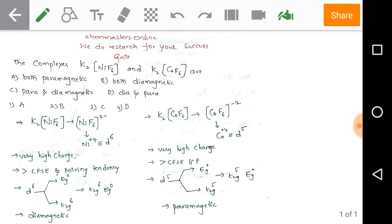Option B: both are diamagnetic. Option C: paramagnetic and diamagnetic respectively. Option D: diamagnetic and paramagnetic respectively. We need to give the perfect option for the given complexes.